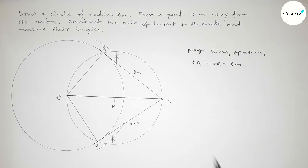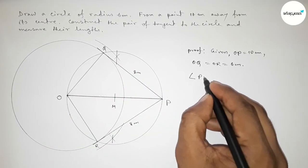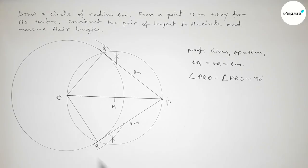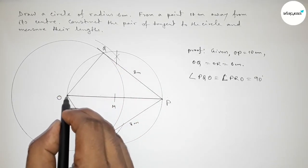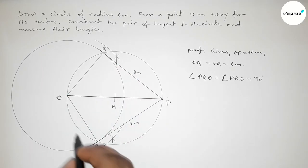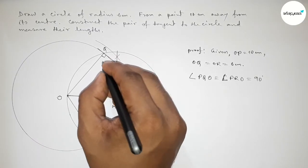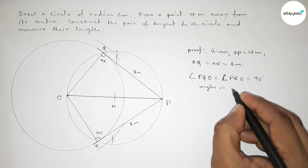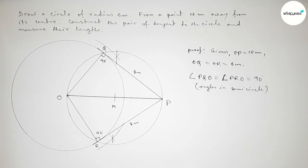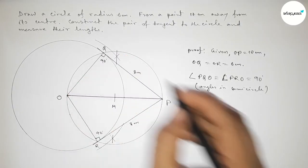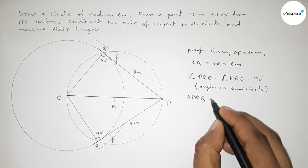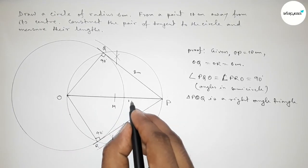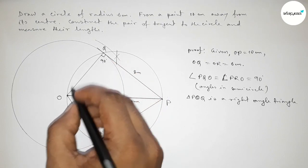OQ and OR equal 6 centimeters as they are radii of the circle. The angle PQO and angle PRO both equal 90 degrees, because if you consider the semicircle, the angle in a semicircle is always 90 degrees. Therefore, triangle POQ is a right angle triangle with hypotenuse OP = 10 centimeters.